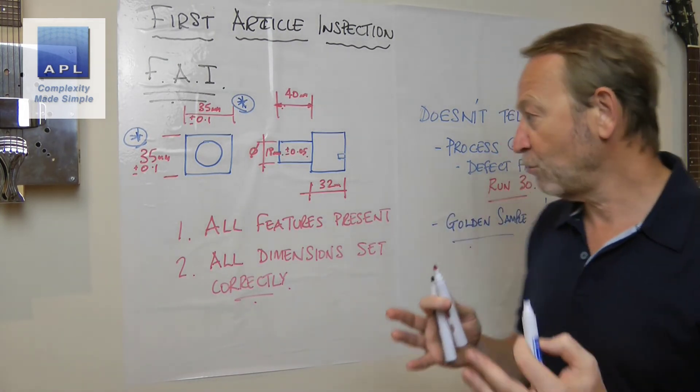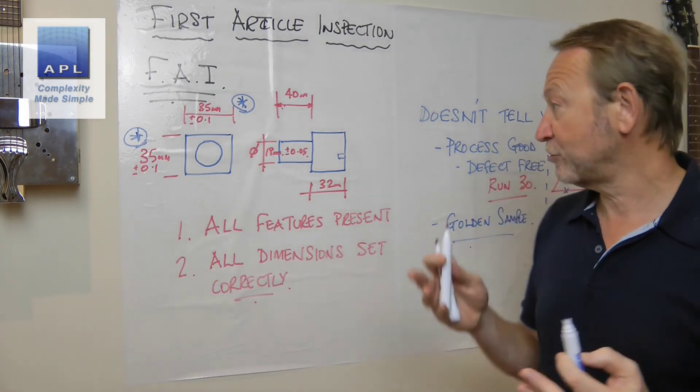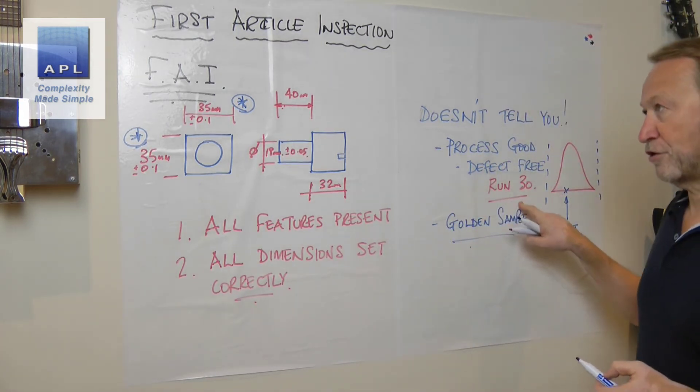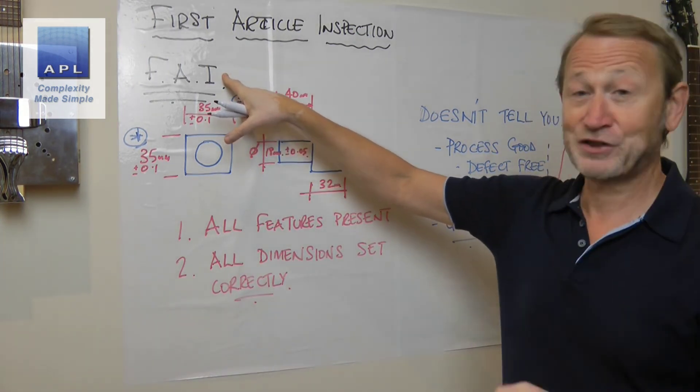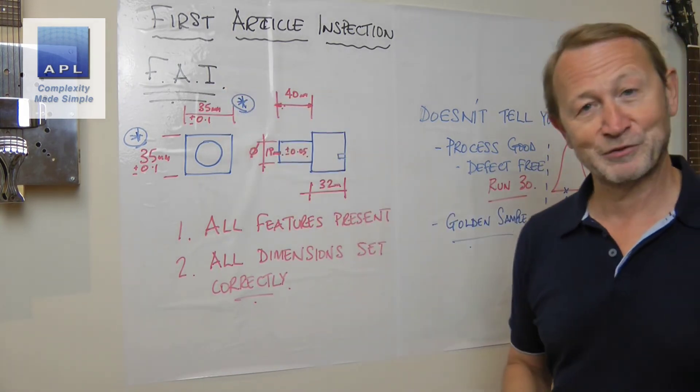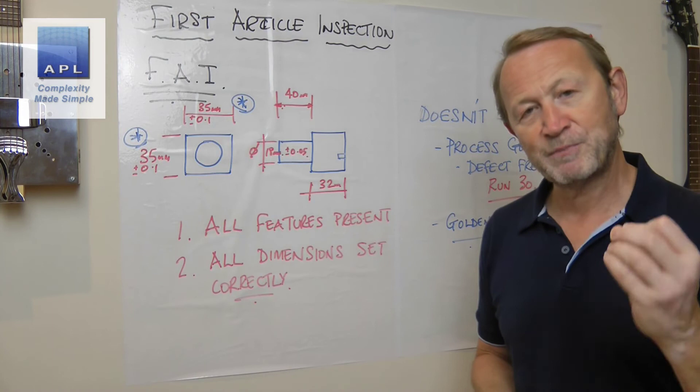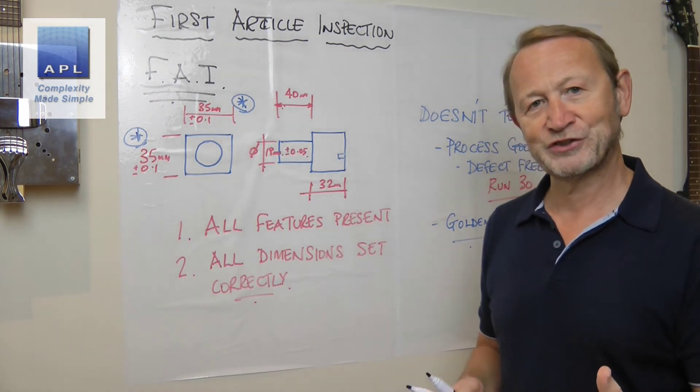If you really want to know information about your process, you're going to have to run 30. This is just the first step that says you've set it up right. Let's switch it on and run 30 pieces and see what process capability we've got. Please keep your First Article sensible, use it for sensible reasons.